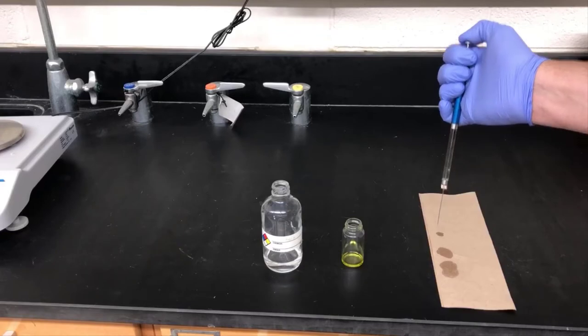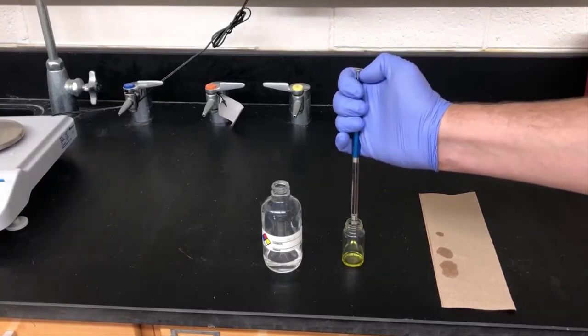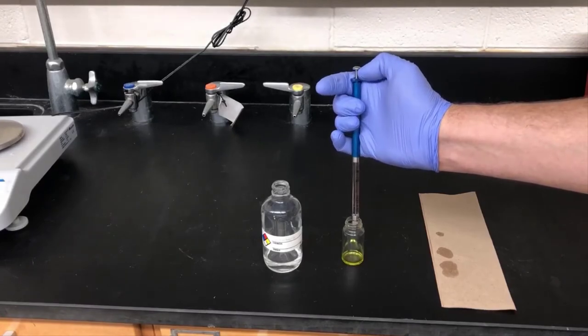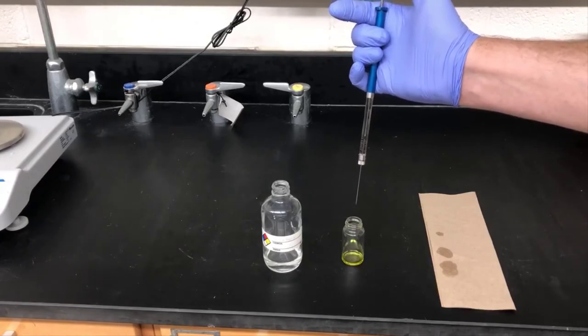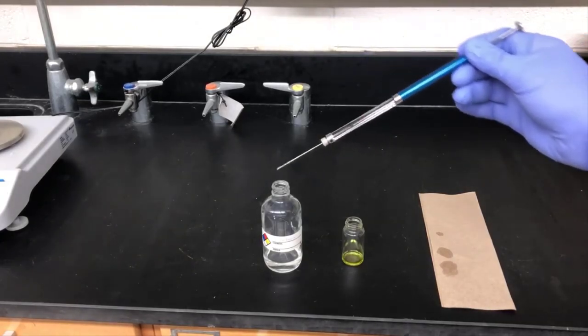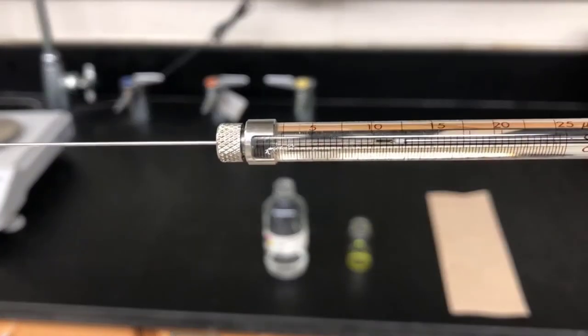The easiest way to do this is to stick the needle into the solution and pull back on the plunger about two millimeters. Then pull it out of the solution and pull back on the plunger to draw in about 10 microliters of air. Now I can look and see exactly how much sample I have in the syringe.